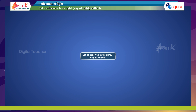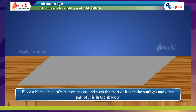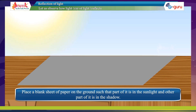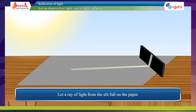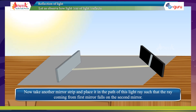Let us observe how light reflects. Place a black sheet of paper on the ground such that part of it is in the sunlight and the other part is in the shadow. Hold the mirror strip with the slit facing the sun. Let a ray of light from the slit fall on the paper. Now take another mirror strip and place it on the path of this light ray such that the ray coming from the first mirror falls on the second mirror.